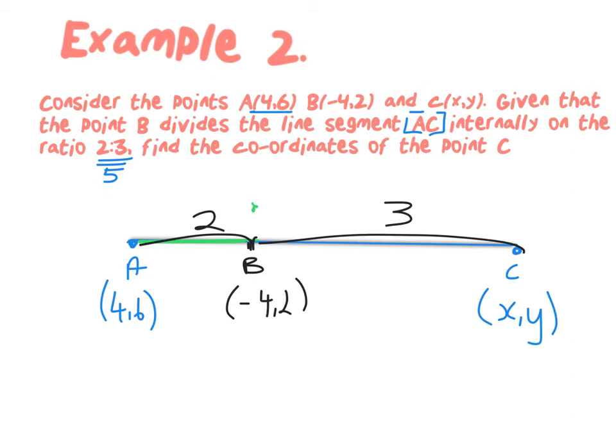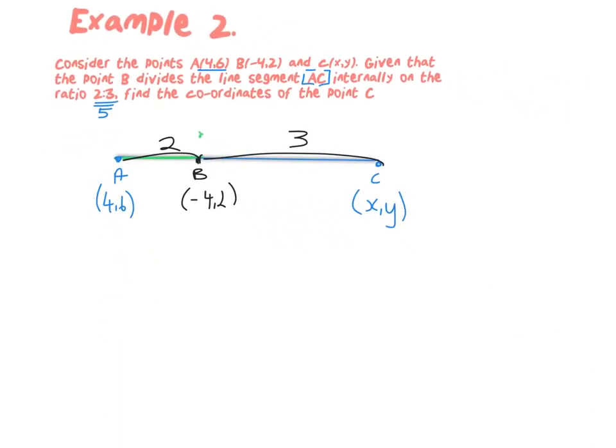Once we've filled out the information, the next port of call is to write down our formula. In this case we're looking for C. The formula always helps us find the divisor. I do know that B is equal to the formula (bx₁ + ax₂) over (b + a), and the second coordinate is (by₁ + ay₂) over (b + a).